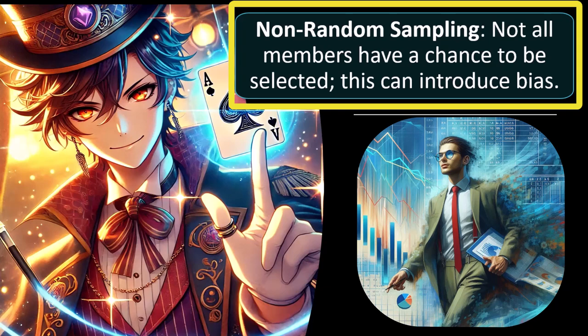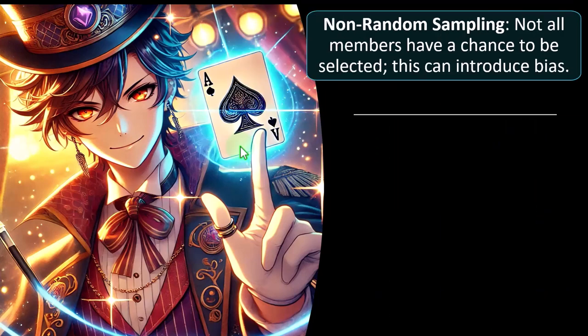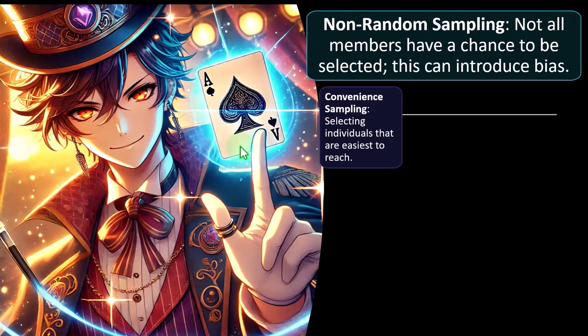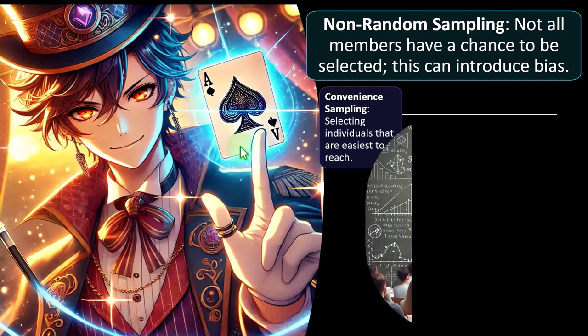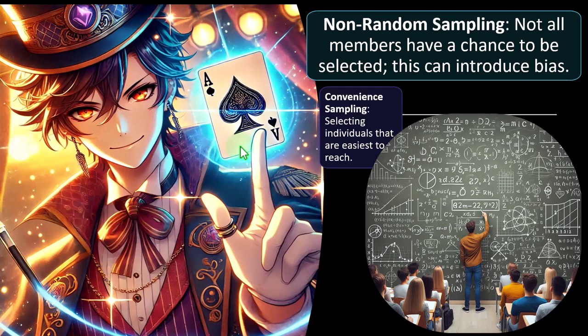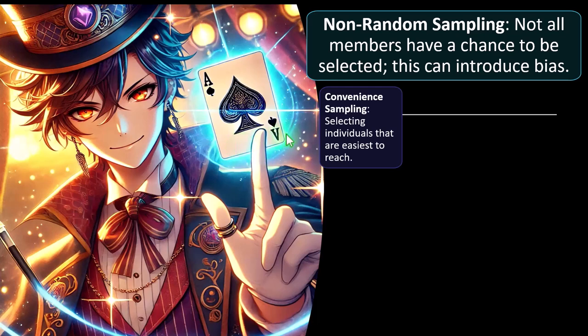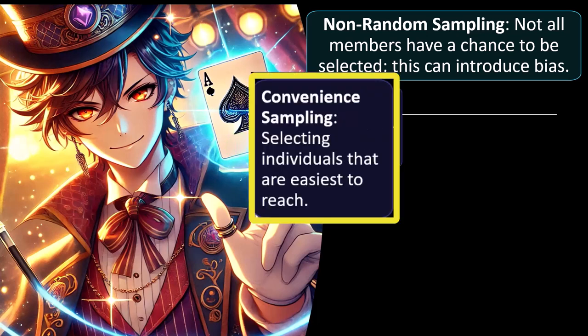Non-random sampling is where not all members have a chance to be selected, which can introduce bias. With non-random sampling, we become suspicious that the selection wasn't truly random. Even very smart researchers might accidentally bias their sampling by their own actions if they have a preconceived idea of what the results could be. That can be difficult to avoid when doing surveys — you need complete randomness to properly test using statistics.